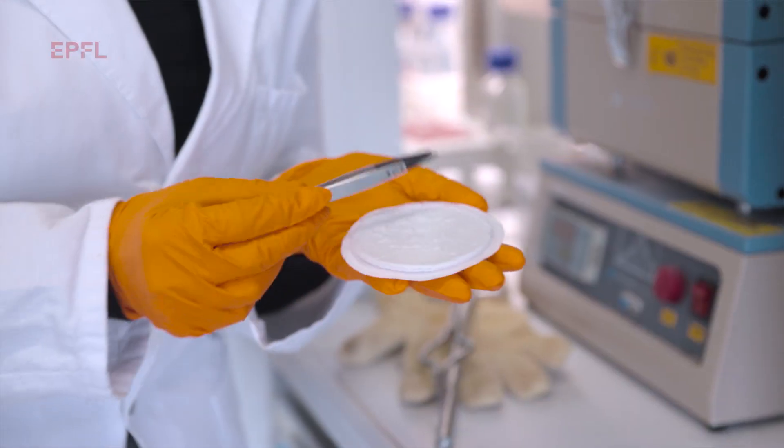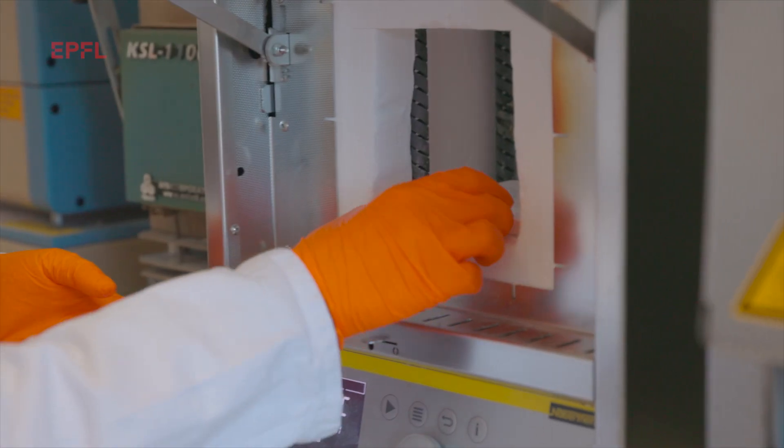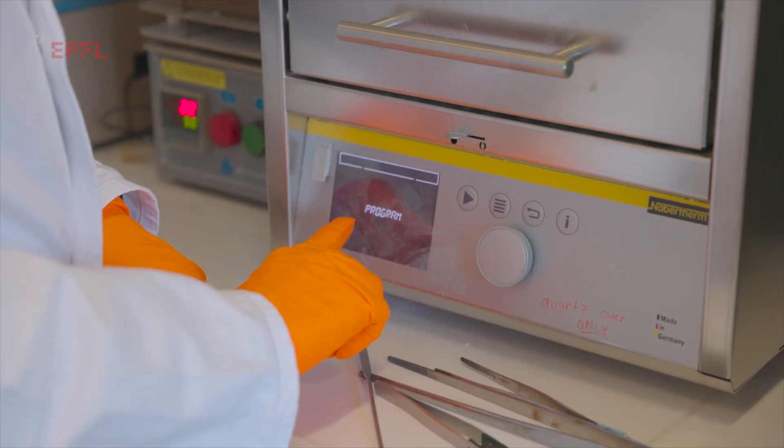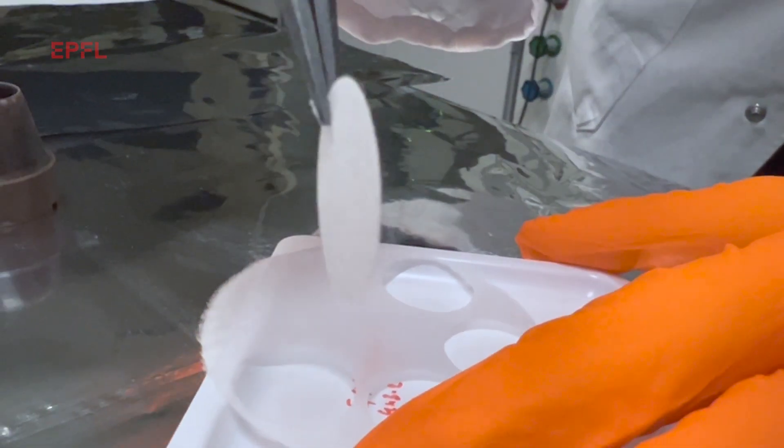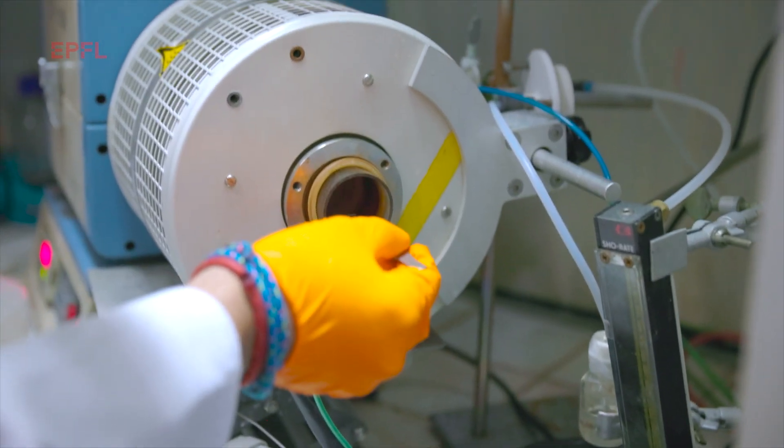We make a quartz fiber template by heating the fibers at 1,350 degrees to melt the fibers and connect them together in a network. Then the second step is to make this transparent porous support conductive by coating a conductive layer which is also transparent on the top.